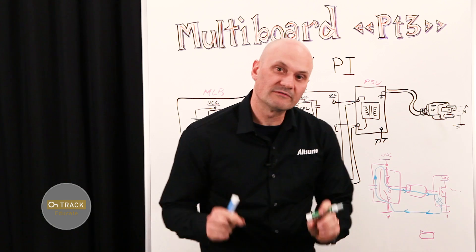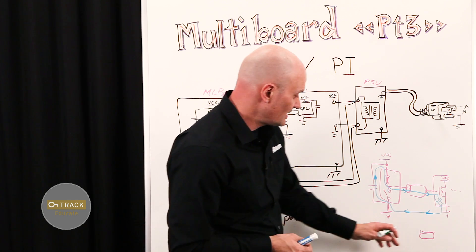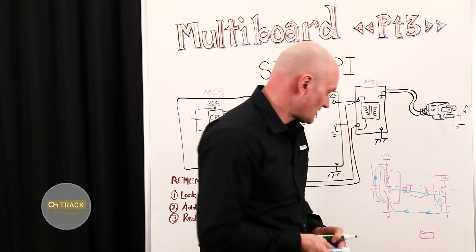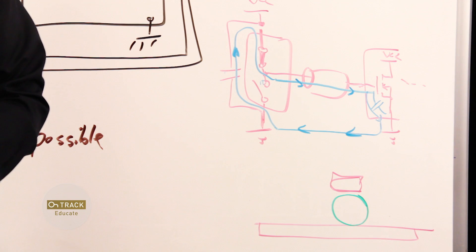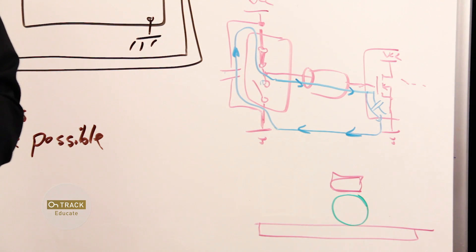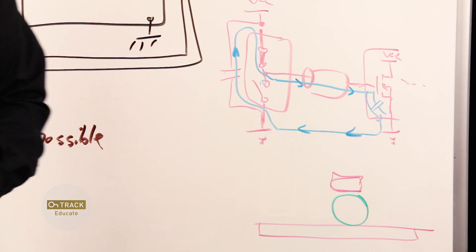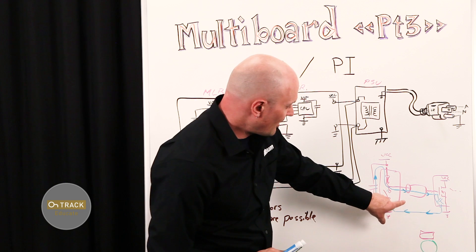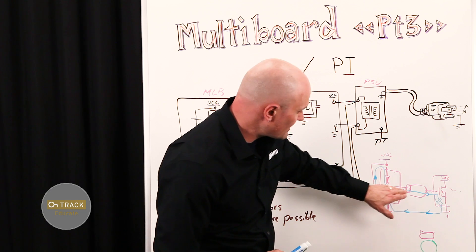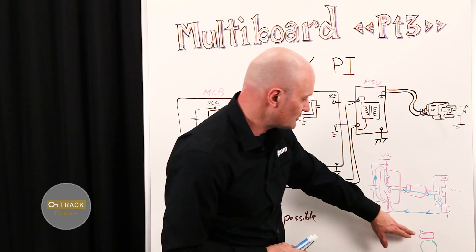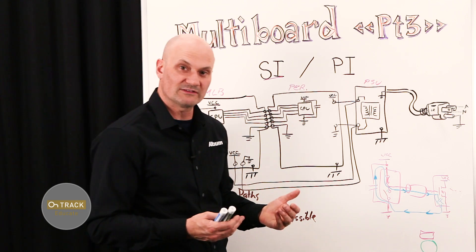At high-speed signal edge rates, the return path current wants to flow as closely as possible to the outbound side of that loop. This is because current in high-speed switching scenarios follows the path of least impedance — just like water follows the path of least resistance. What that actually means is it wants to have the smallest possible loop area to fill that charge as the voltage wavefront travels down the transmission line. So at high frequencies and edge rates, the return path current wants to flow as closely as possible to the actual signal trace down the PCB, and the same thing happens in board-to-board connections across the connector.